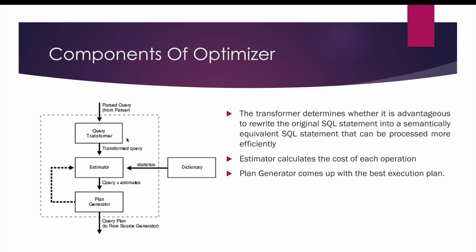The query transformer then sends the transformed query to the estimator, and the estimator calculates the cost of each operation based on the statistics from the data dictionary tables. The plan generator then comes up with the best execution plan based on the statistics provided by the estimator, and that best execution plan will be used by the SQL query to execute the operation.